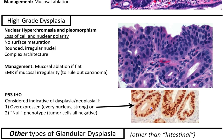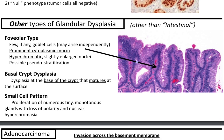P53 is considered indicative of dysplasia and neoplasia if it's overexpressed — where every nucleus stains strongly — or null phenotype, where the tumor cells are all negative.